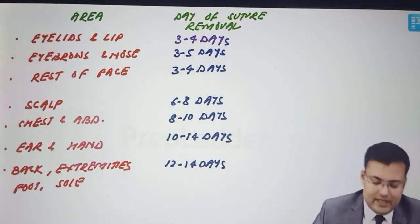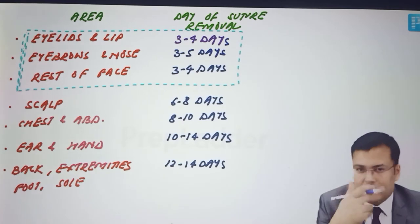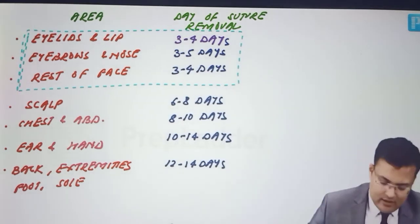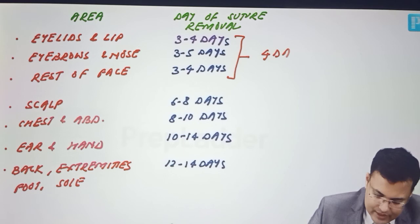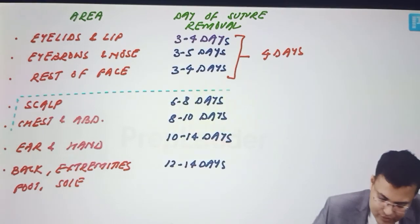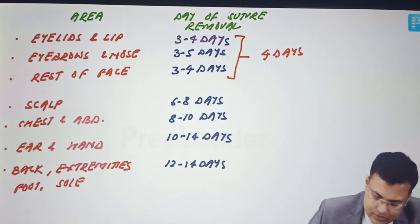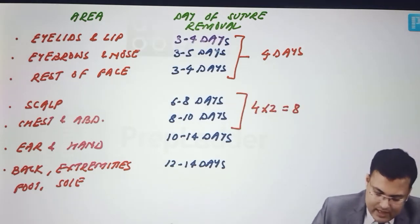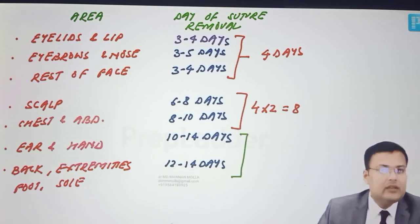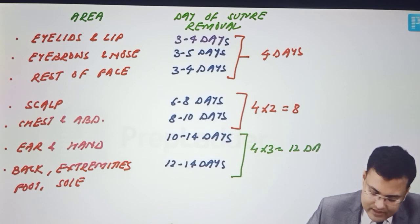How to remember: face-related areas except ears — sutures removed in four days broadly. In scalp, chest and abdomen — four times two, which is eight days. In ear, hand, back, extremities, foot and sole — four times three, which is twelve days. So this is the easiest way to remember. Now we are going to discuss bowel anastomosis, but before that, I want to tell you the layers.